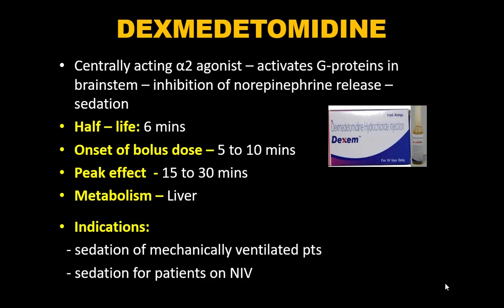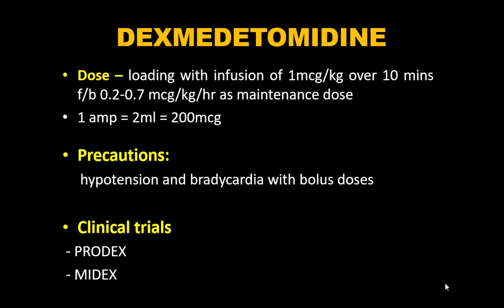Dexmedetomidine is a centrally acting alpha-2 agonist that activates G-proteins in the brainstem, leading to inhibition of norepinephrine release — causing both sedation and analgesia. Half-life is 6 minutes, onset with bolus is 5–10 minutes, peak effect is 15–30 minutes, and it is hepatically metabolized. Indications: conscious sedation, sedation of mechanically ventilated patients, sedation for NIV, and procedural sedation. Loading dose: 1 mcg/kg over 10 minutes; maintenance: 0.2–0.7 mcg/kg/hour.